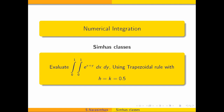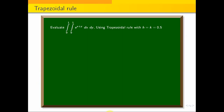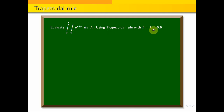Numerical integrations. Double integration problem — trapezoidal rule applied. Evaluate the double integral with limits 0 to 1, 0 to 1 of e^(x+y) dx dy using the trapezoidal rule with h equal to k equal to 0.5.